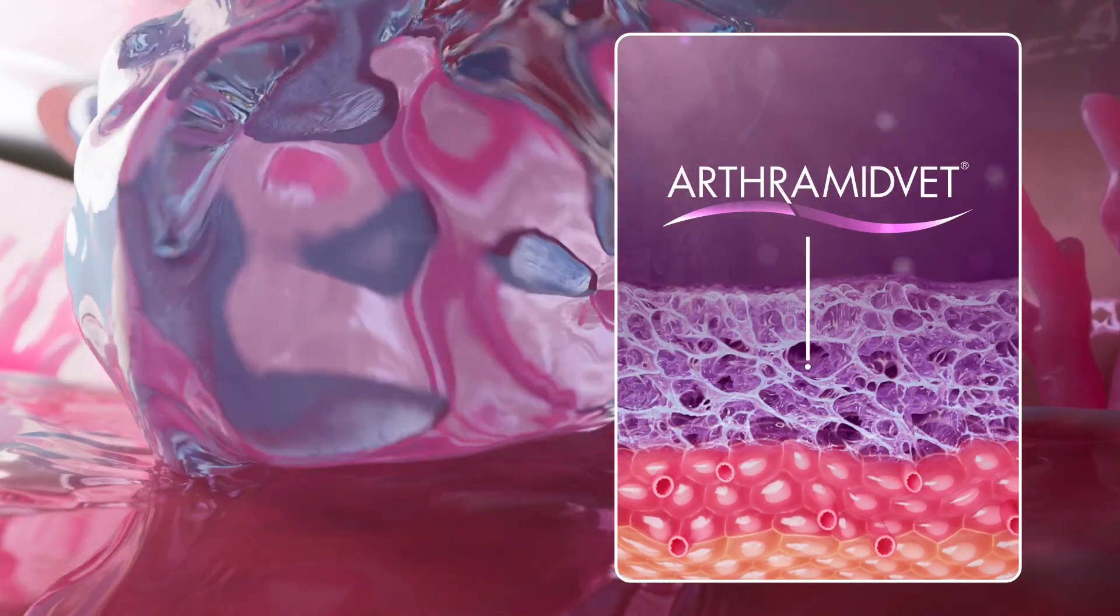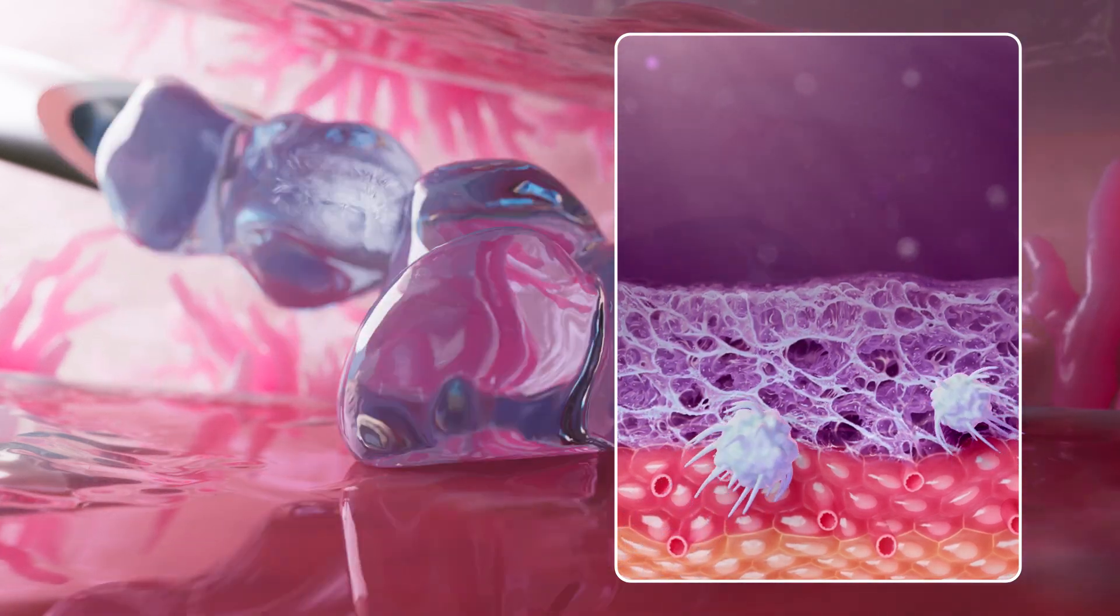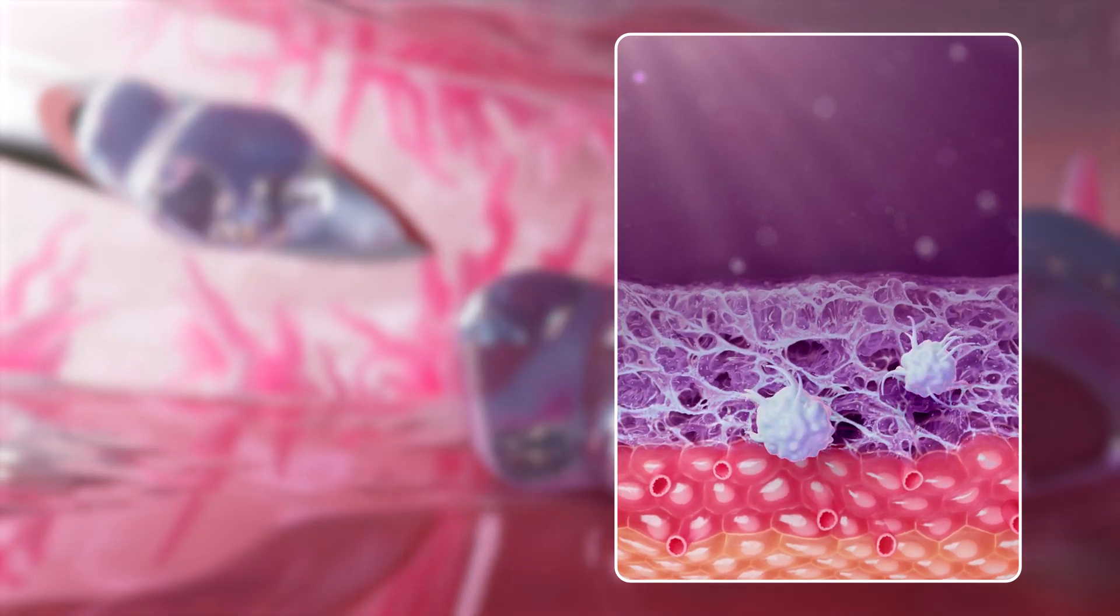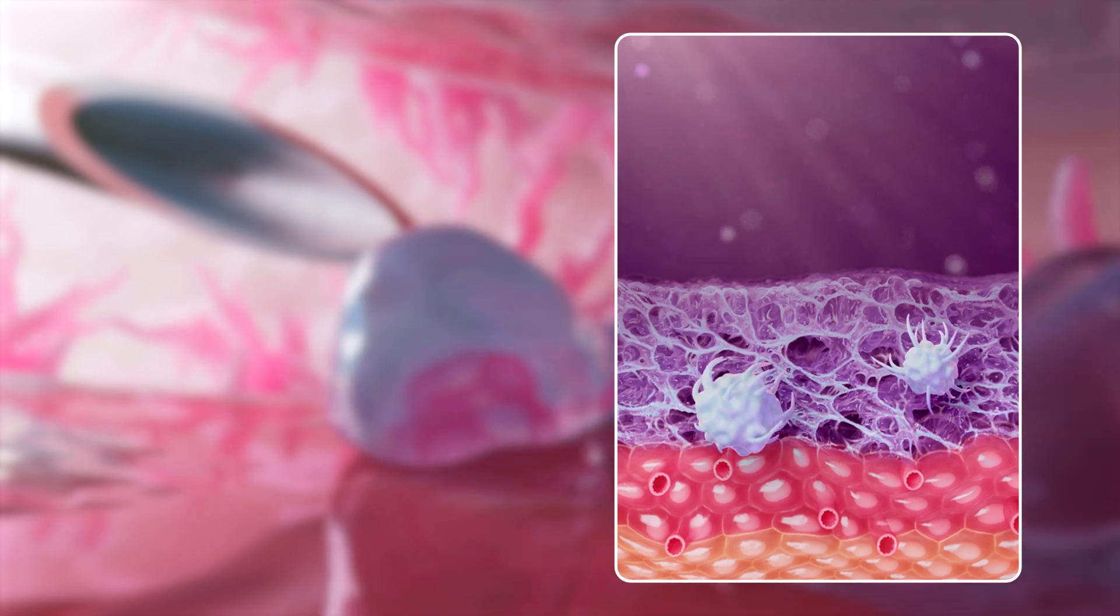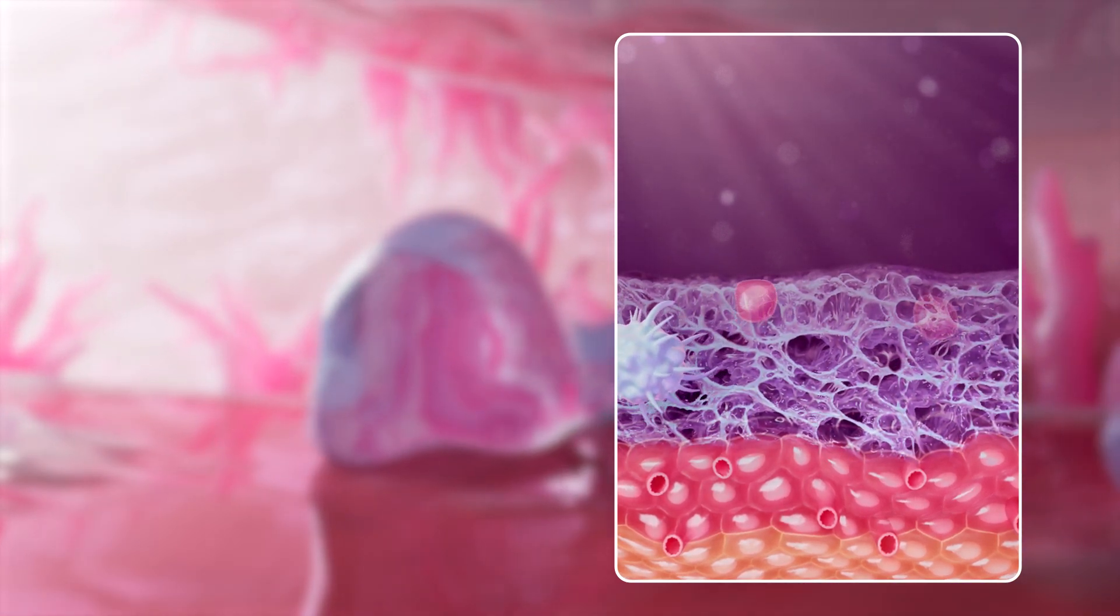After intraarticular injection, ArthurMedVet adheres to the synovial lining, allowing the synovial tissue to grow into and through the hydrogel. Because macrophages are unable to phagocytize ArthurMedVet, it persists. Through water molecule exchange, it then forms a bioscaffold that helps to reinforce the synovial lining.